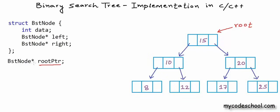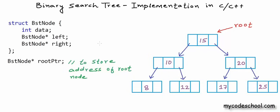I have declared a pointer to node here named root_ptr. In C you will have to write 'struct' as well; I'm writing C++ here. In this logical structure of the tree, each node has three fields — three cells. The leftmost cell stores the address of the left child and the rightmost cell stores the address of the right child. Let's say the root node is at address 200 in memory; I'll assume some random addresses for all other nodes as well.